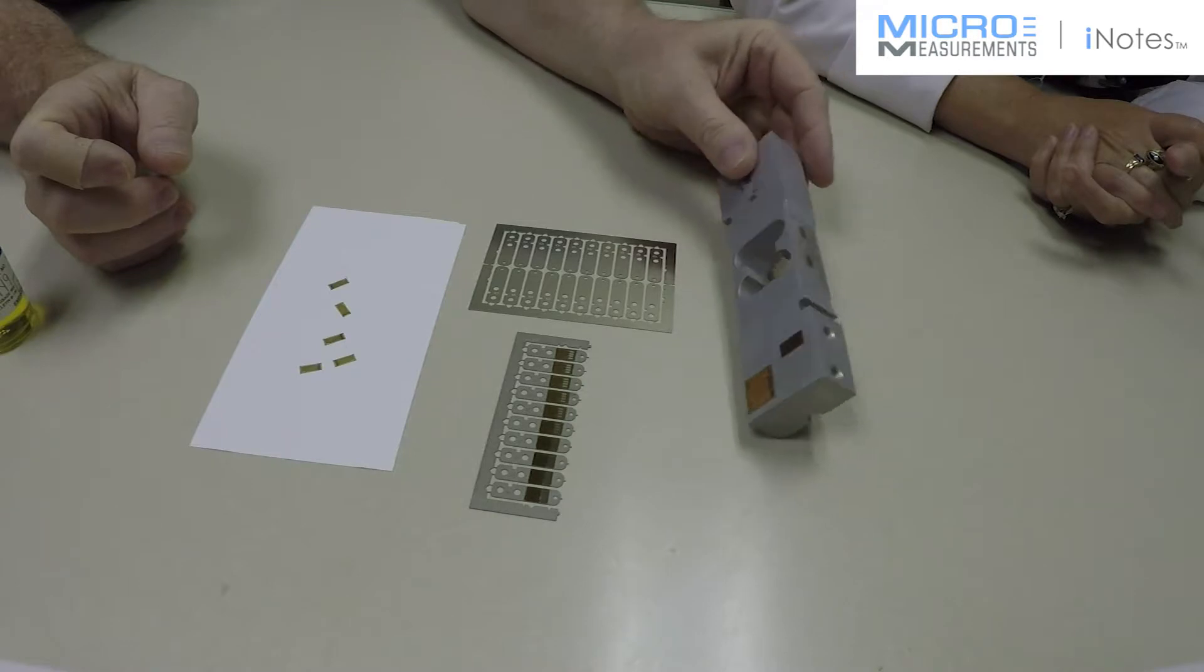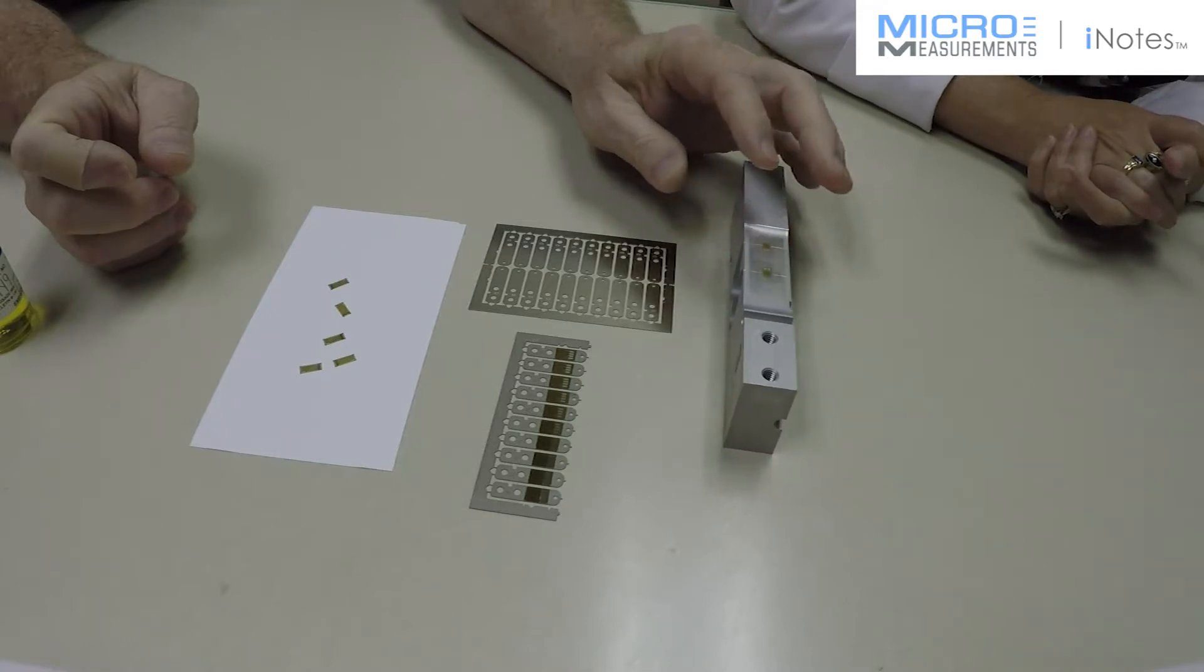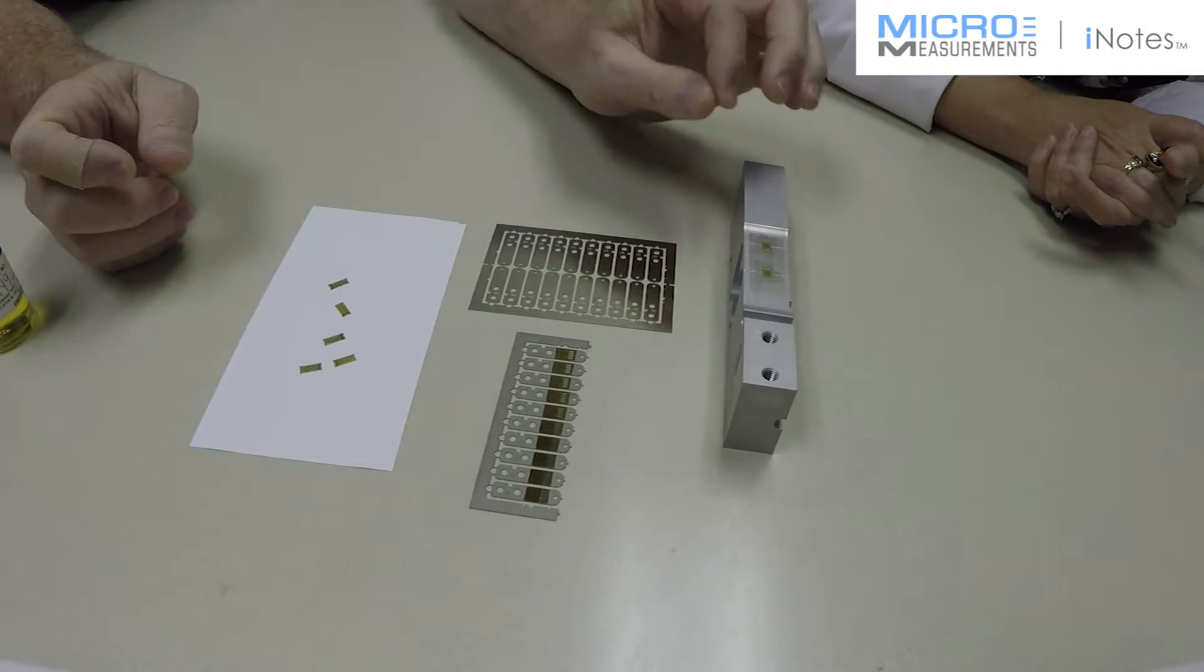If it's a thicker spring element, like this aluminum load cell, you'd need to locate it, put a piece of tape over it to hold it, then clamp it and cure it.